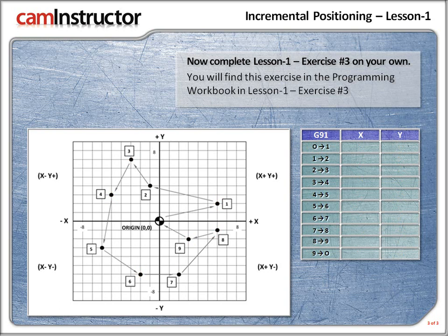Now we're changing gears. For this exercise, we're going to figure out the incremental coordinates from positions 1 through 9. G91 is the code to let the CNC machine know that the coordinates are in incremental. With incremental, we're figuring out the distance from the last position to the next end point, and we also need to identify if it's a positive or negative direction. From the origin to position 1, it's 6 squares along the x-axis and 2 up along the y-axis — both positive values. So incrementally, we move x positive 6 and y positive 2.